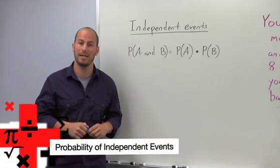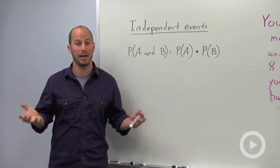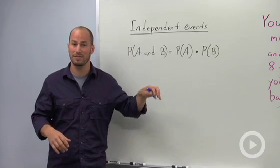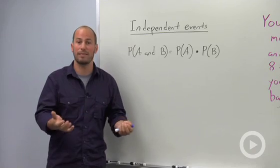Finding the probability of independent events. So independent events are events that have no bearing on each other. If something happens over here, something happens over there, as long as they're not affecting each other, they're called independent events.